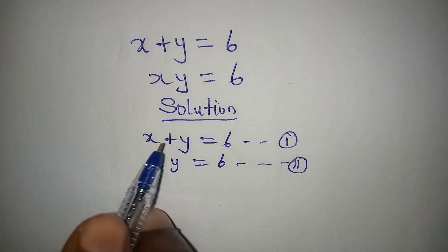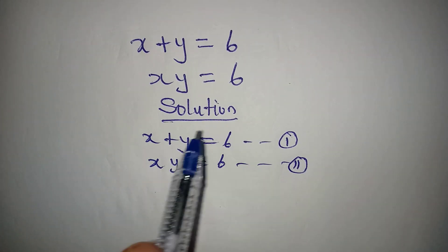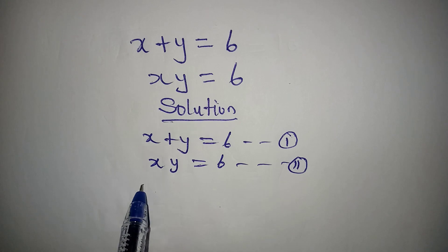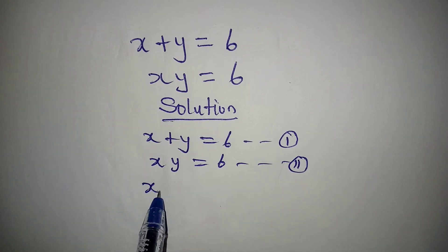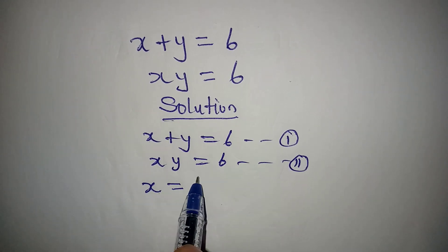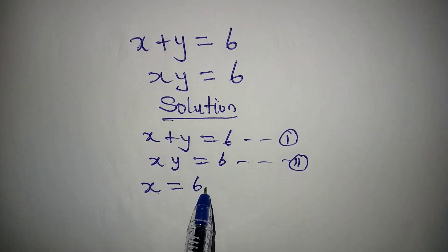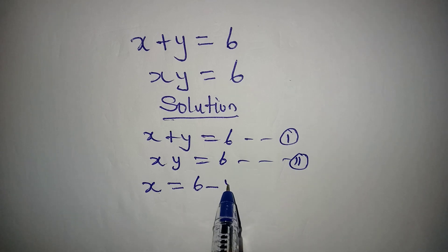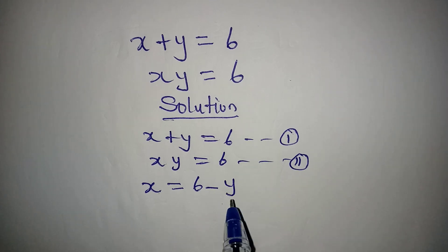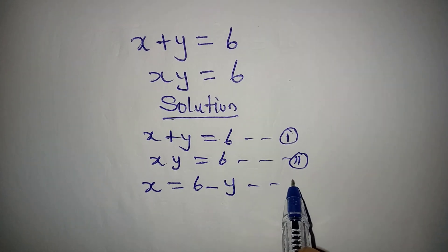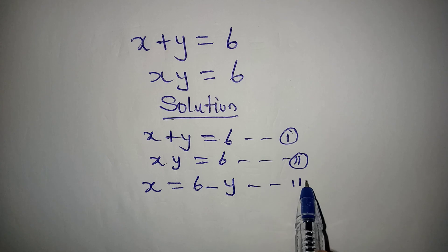From equation 1, we can make x the subject. So we have x equal to 6 minus y, and we will call this equation 3.